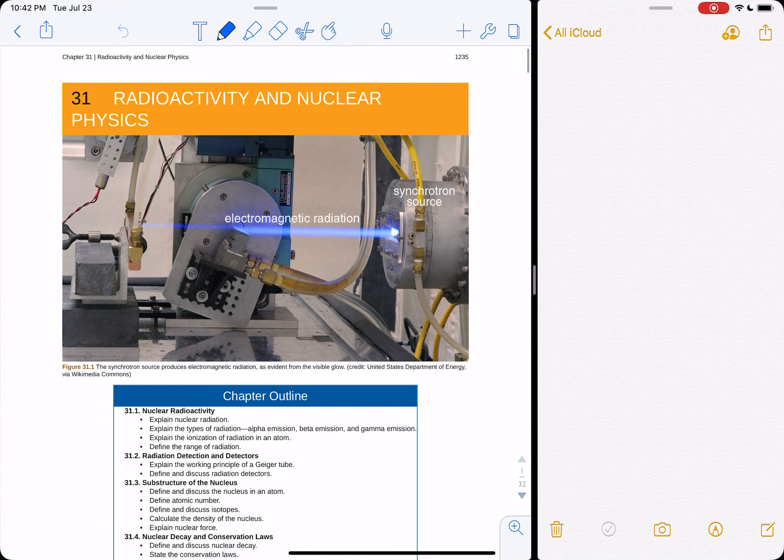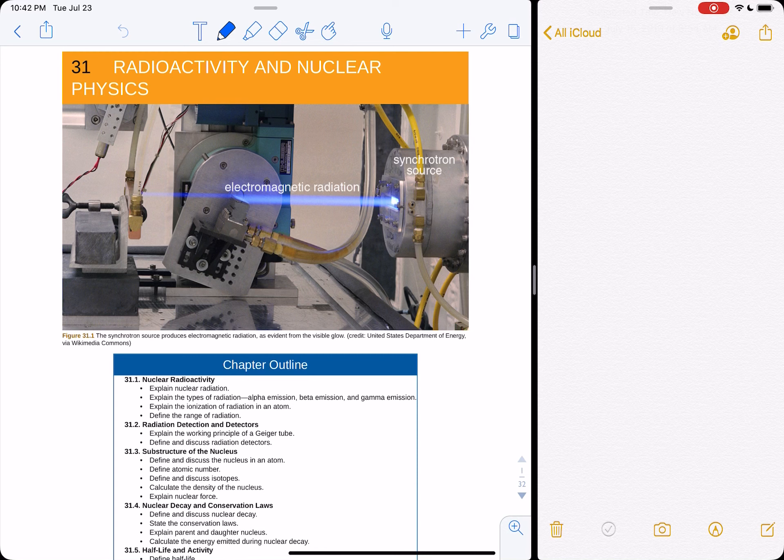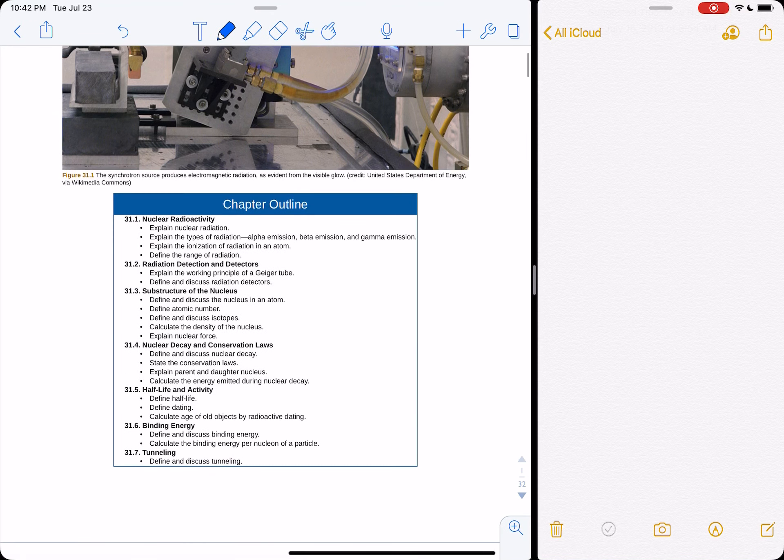All right, let's talk about chapter 31, radioactivity and nuclear physics. Pretty cool little picture here. Radiation source shooting radiation out of the synchrotron there. So we're going to talk about nuclear radioactivity, radiation detectors, and how to detect it.